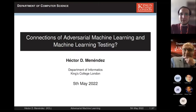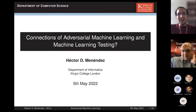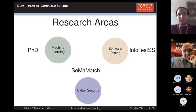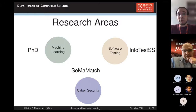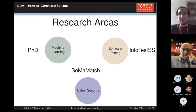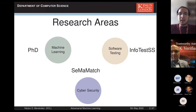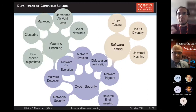Thanks for inviting me and thanks Mohamed for the introduction. I'm Hector and I'm going to talk about the connections of adversarial machine learning and machine learning testing. I started my PhD in machine learning in 2012 and once I finished in 2014, I joined UCL and started working in cyber security. This talk has a lot of things related to malware, and a few years later working with David Clark on malware analysis, we started working in software testing.